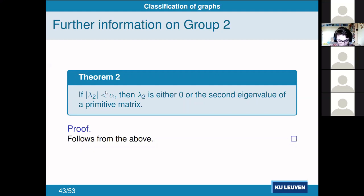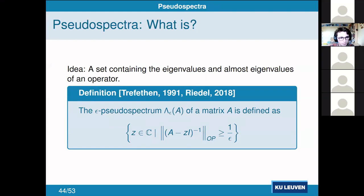Putting it all together: for hump graphs, the second-largest eigenvalue is determined entirely by the structure of the one closed aperiodic component — it has nothing to do with any other node in the graph. This means a large number of different graphs can leak exactly the same information. The information leaked by the runtime is entirely based on this one closed aperiodic component.